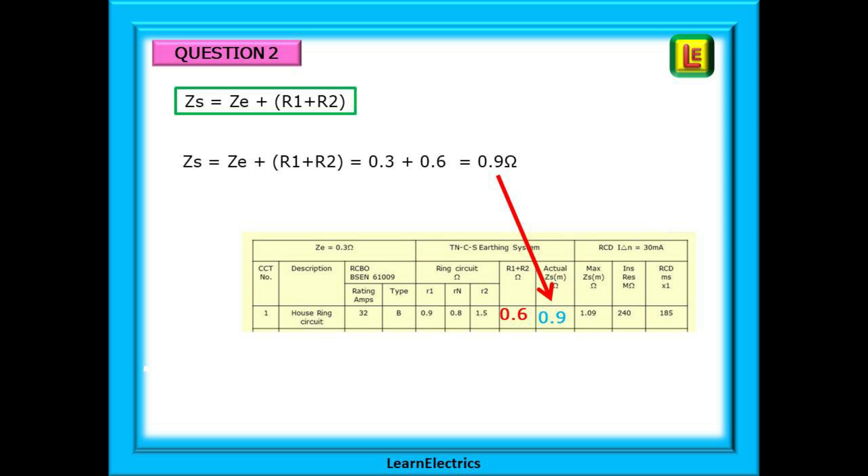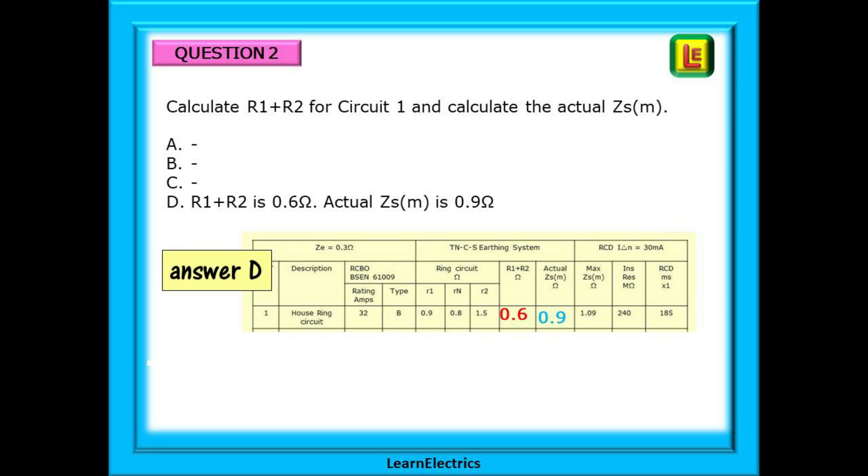Now calculate what the actual ZSM should be. The formula at the top of the page is the one to use. ZS equals ZE plus R1 plus R2. Well ZE is given on the chart as 0.3 ohms and we have just calculated R1 plus R2 as 0.6 ohms. Add them together and ZSM is 0.9 ohms. Our answer is D. How easy is that? Just answer the question one stage at a time.